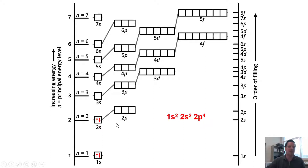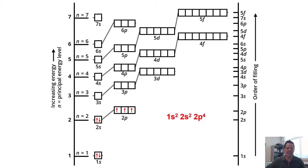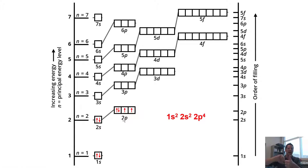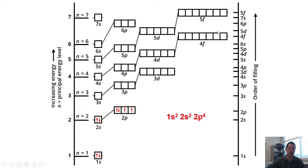I fill the 2p boxes one at a time without pairing electrons until I have to — one electron in each box first. The fourth electron must pair up in one of the boxes, receiving a down spin (-1/2), so the two electrons in that orbital have the same first three quantum numbers but opposite spins. Note that each d shell has five boxes (five d orbital shapes) and each f shell has seven boxes (seven f orbital shapes).